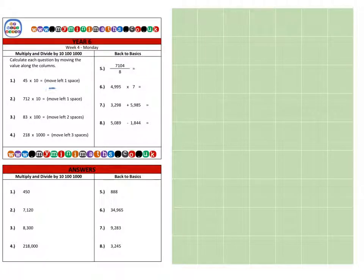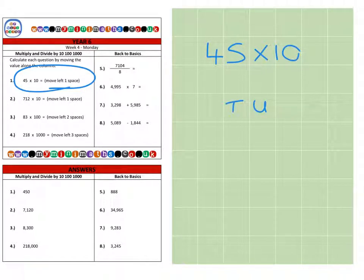So first of all, on to question one, which is 45 multiplied by ten. If we take our units and our tens, and we place our 45 in there, and we have our hundreds here.